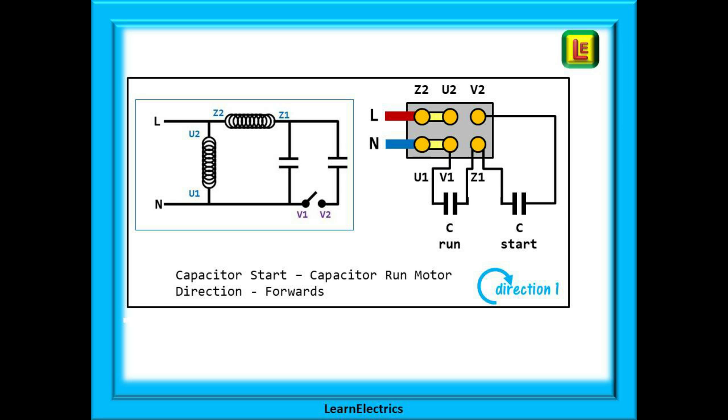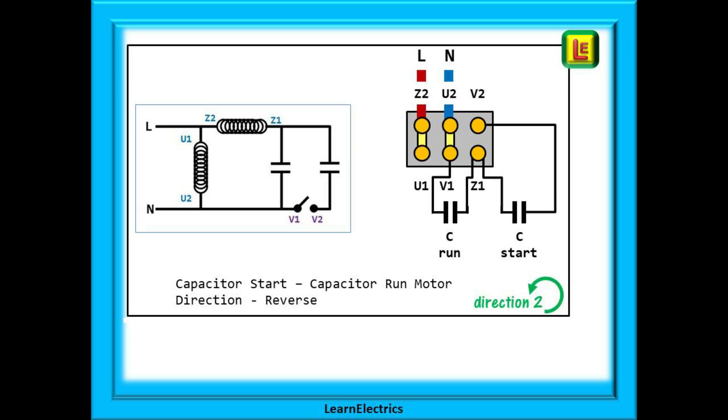The terminal block configuration is shown here. The run capacitor is between V1 and Z1 whilst the start capacitor is between Z1 and V2. To change direction as with the other motors change the position of the links and the position of the phase and neutral.